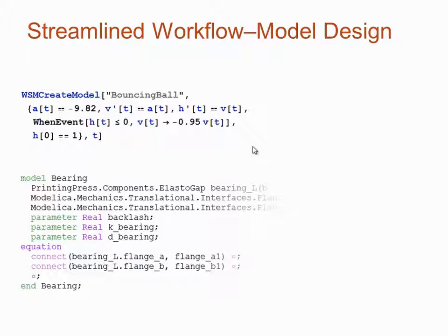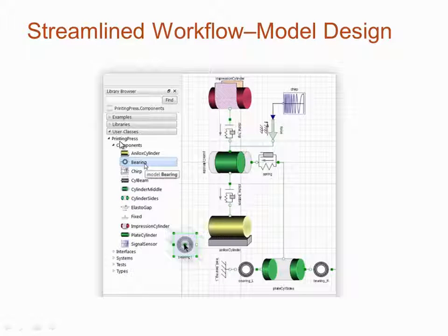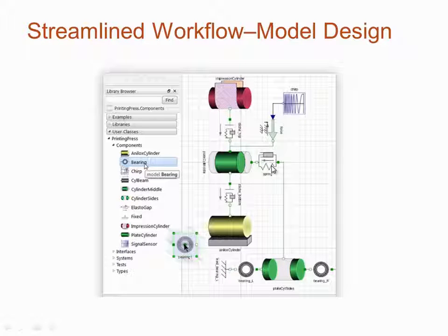If you need a component that is not built-in or available in the store, you have two options. If you have Mathematica, you can type equations in the Wolfram language and generate System Modeler models from there, as in this example of a bouncing ball. You can also develop models textually directly from System Modeler using the Modelica language, defining equations and connecting components, such as in this example of a bearing. Whether models are built from libraries, programmed textually, or a combination thereof, you can save them into custom libraries for easy reuse and drag-and-drop modeling — building your models hierarchically, step-by-step, making them more advanced as you go.